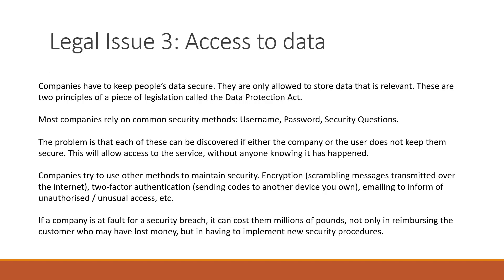Companies try to use other methods to maintain security. Encryption, for example, is a common method of maintaining security, where they scramble the messages being transmitted over the internet. More commonly now, we're using two-factor authentication, which is where if you sign into a service, a code will be sent to another device — i.e. your phone — and then you will have to confirm that you are the one accessing that service.